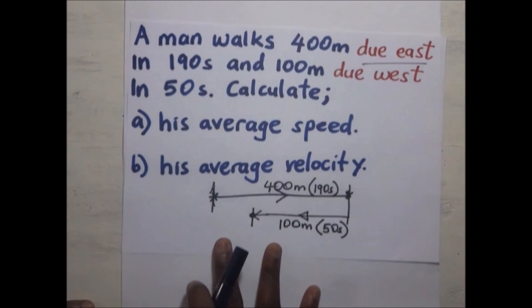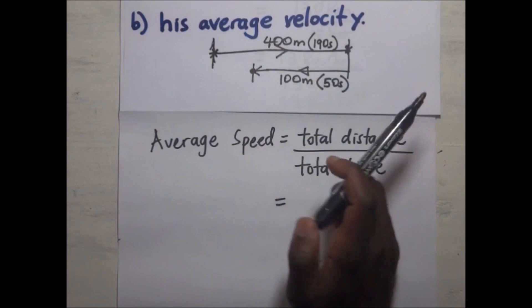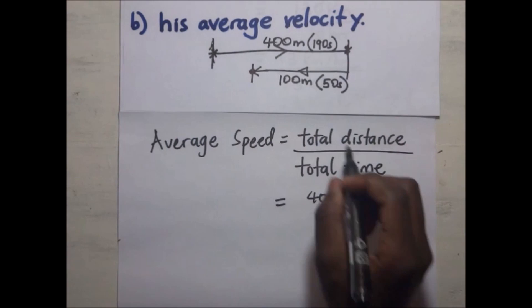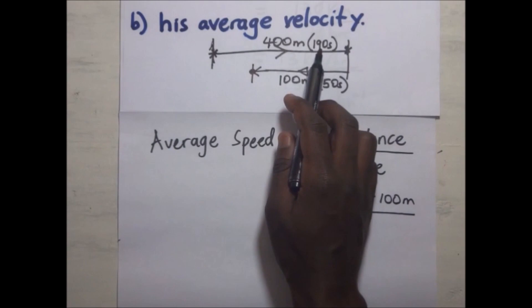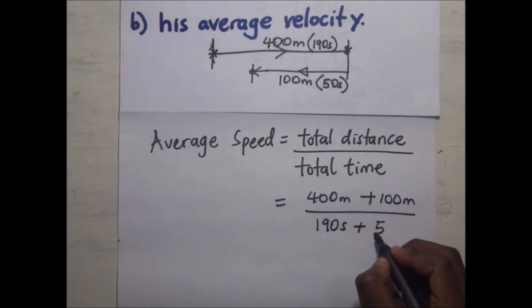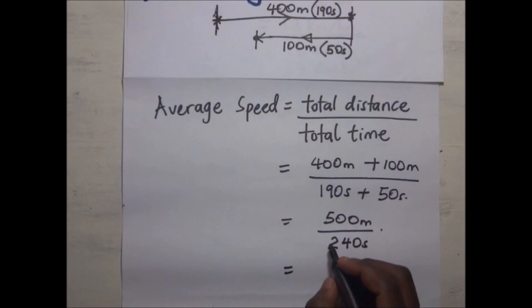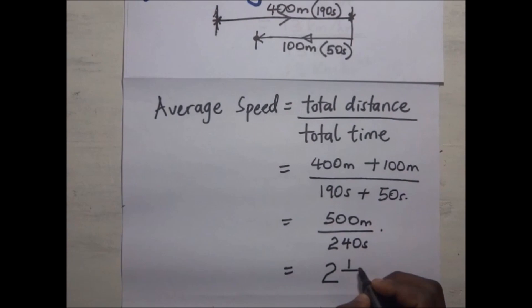For average speed, we only care about magnitude. Total distance is 400 plus 100 equals 500 meters. Total time is 190 plus 50 equals 240 seconds. Average speed equals 500 divided by 240, which gives approximately 2.1 meters per second.